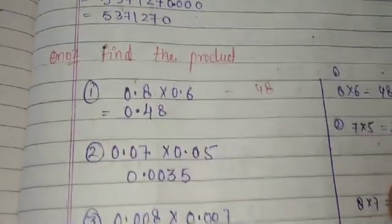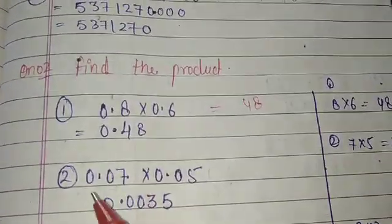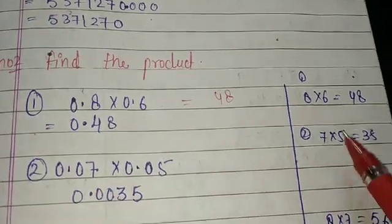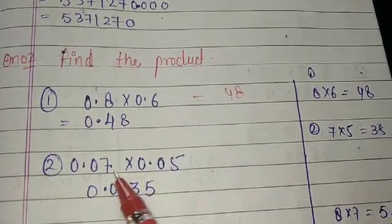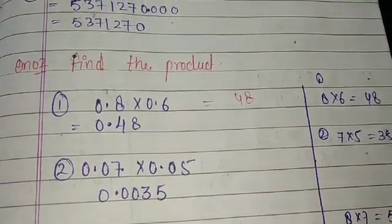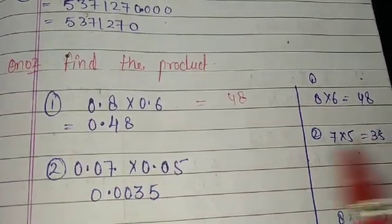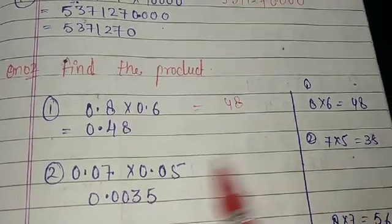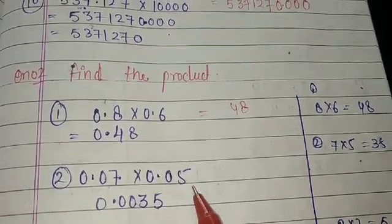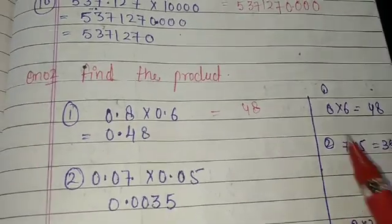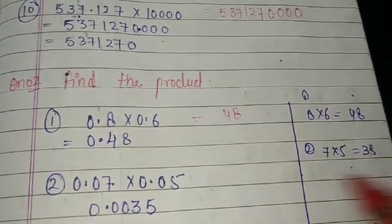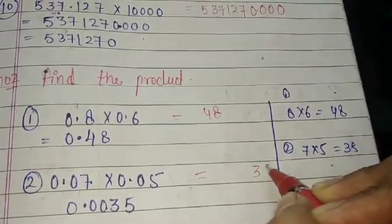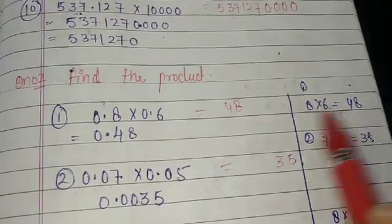Next: 0.7 times 0.5. Take only digits: 7 times 5 is 35. Now observe the decimal digits in both numbers: 1 digit in 0.7 and 1 digit in 0.5. Total is 2 decimal places. So I place the point 2 digits from the right in 35, giving 0.35.